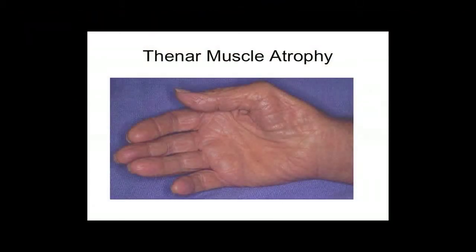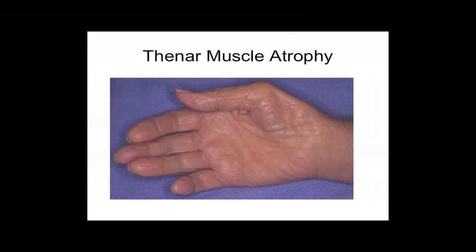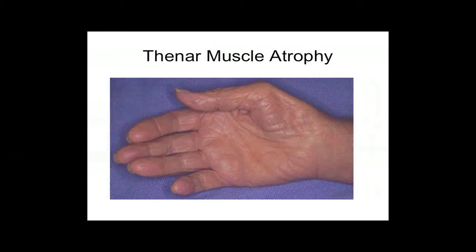An important physical finding is thenar muscle atrophy. The large muscle controlling your thumb is median nerve innervated, and when you see thenar atrophy, it means denervation has been present for a long time — a poor predictor of success when treating carpal tunnel. Two patients who don't get better: the one who doesn't have carpal tunnel, and the one who has it but it's so far gone that nothing can recover. This is a big red flag that the condition is beyond retrievable, though we may still do carpal tunnel release to arrest progression.